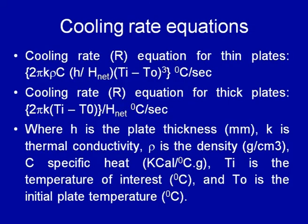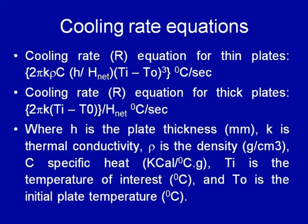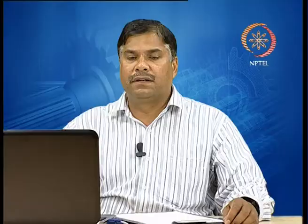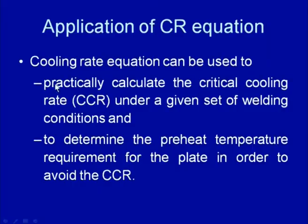For calculating the cooling rate, separate equations are used for thin plates and thick plates. In these equations, H is the plate thickness in mm, K is the thermal conductivity, ρ is the density, C is the specific heat, Ti is the temperature of interest (mostly taken as 550°C for hardenable steels), and T0 is the initial plate temperature in °C. These two equations can be effectively used for practically calculating the critical cooling rate under welding conditions and also to determine the preheat temperature required to avoid the critical cooling rate and any austenite-to-martensite transformation tendency.